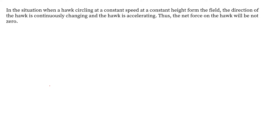In the third situation, a hawk is circling at a constant speed at a constant height above a field. Although the speed is constant, the hawk is moving in a circular path. As we can see, the velocity at the bottom of the circle is in a different direction from the velocity at the top, so there is a change in velocity due to the change in direction. Therefore, there must be some force acting on the hawk to change its direction — force is present in this situation.